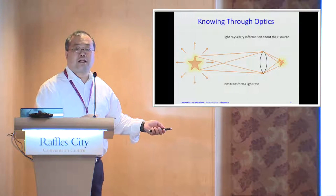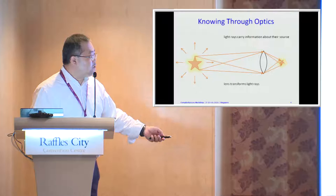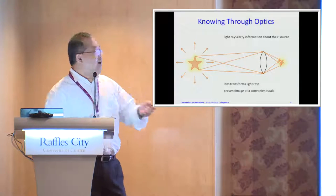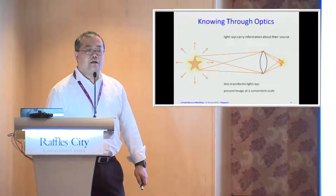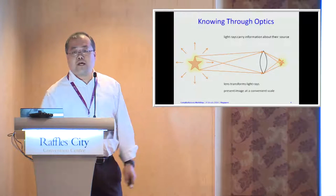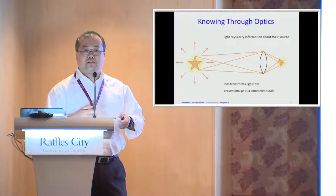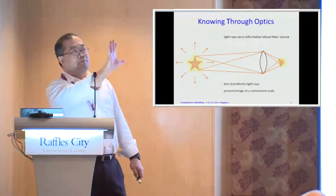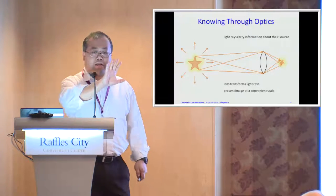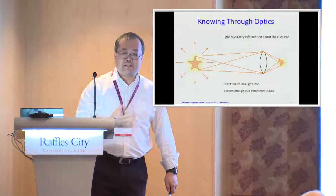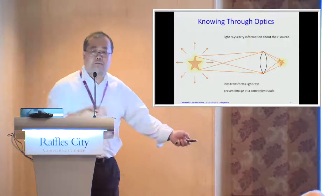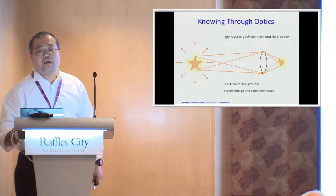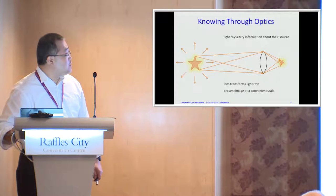Most importantly, if the star is millions of light years away and is a very huge object, and the image presented to us were the same size as the actual star, we couldn't understand anything — we'd just see a very bright surface. But because it is presented to us at a convenient scale, we can start to ask more questions about the structures of stars, what they are, what they're made of, and what they mean in the natural history of the universe. That's knowing through optics.